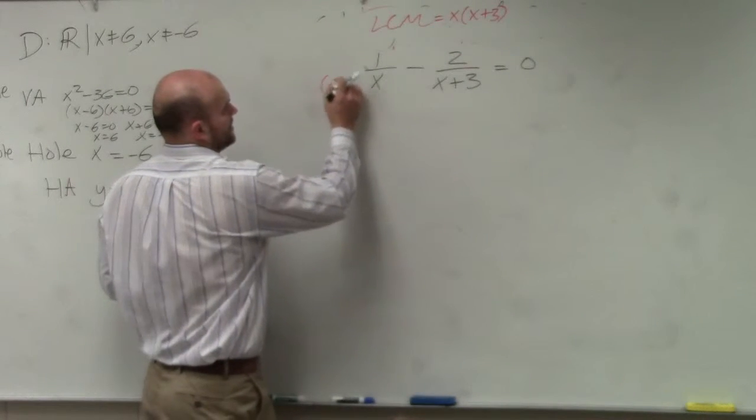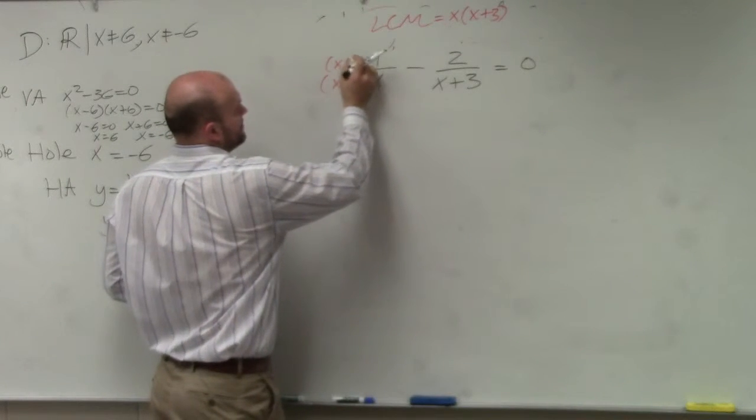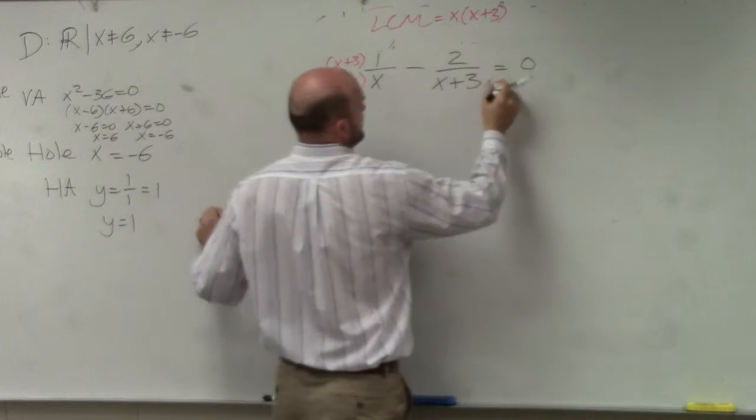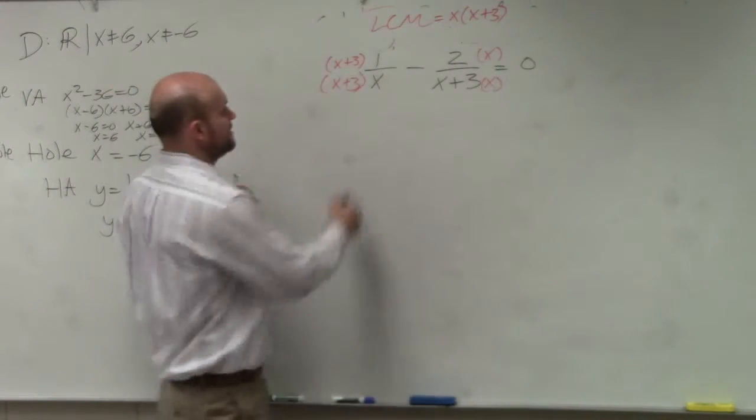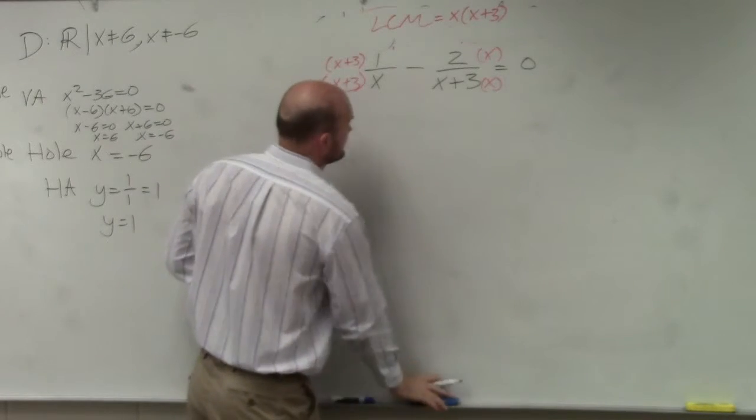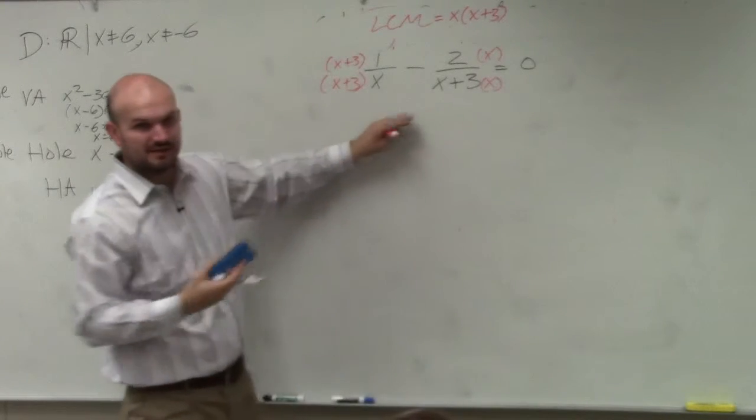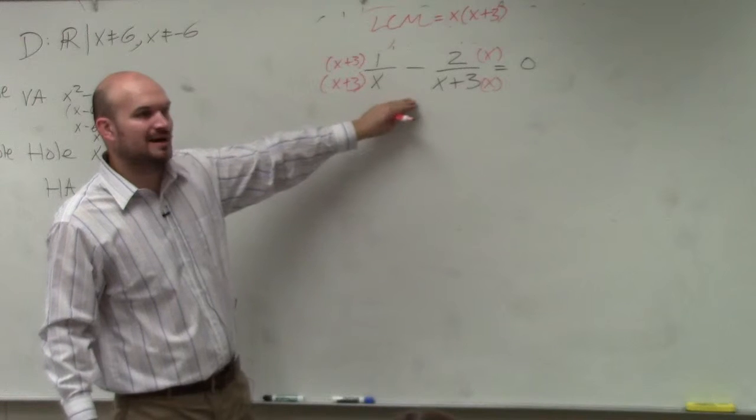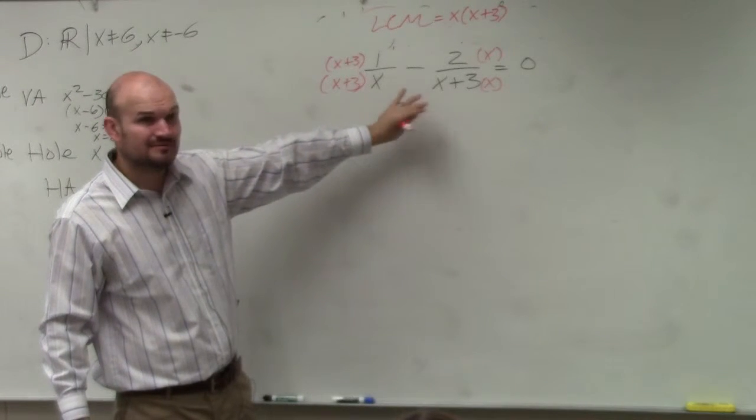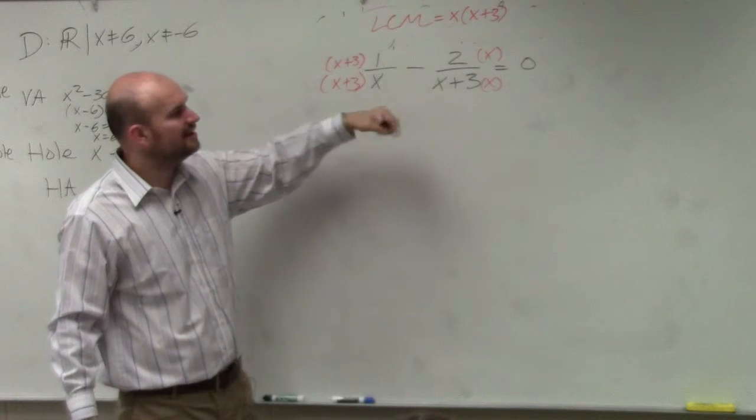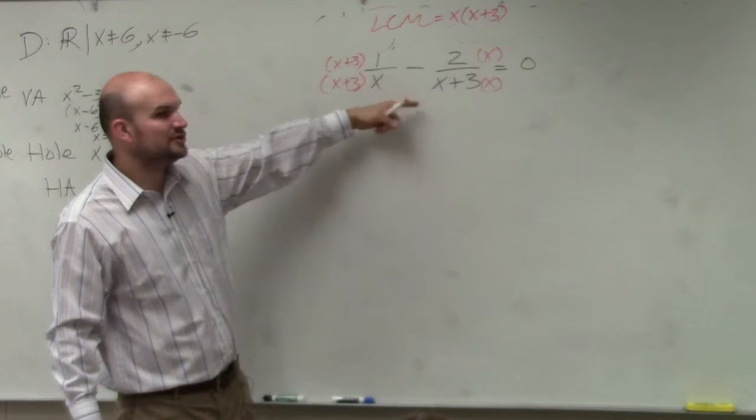So to get our common denominator, I multiply by x plus 3 on the top and bottom. Here, I multiply by x over x. Then I'll have my common denominator. Oops, I'm sorry, what am I doing? That's if we wanted to subtract them, right? Or if we actually wanted to combine them, correct? Yes? That's perfectly fine. There's nothing wrong with what I just did.